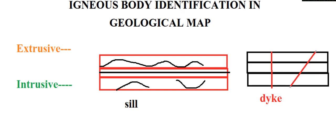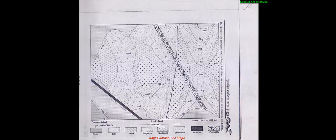We also find batholith and boss, which are injected across all the beds. For shape and size, it is a huge amount of igneous body found in the geological pits or lithological beds or below the earth's surface, which is called a batholith or boss. This type of igneous body we find in geological maps.